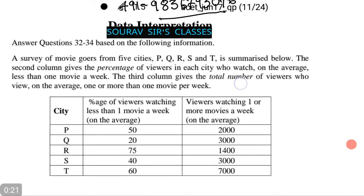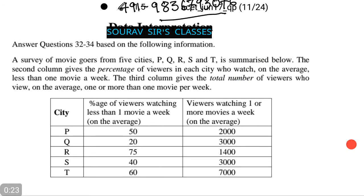Let's see our first question. A survey of the moviegoers from five cities P, Q, R, S, T is summarized below. The second column gives the percentage of viewers in each city who watch on the average less than one movie a week. The third column gives the total number of viewers who view on the average one or more than one movie per week.